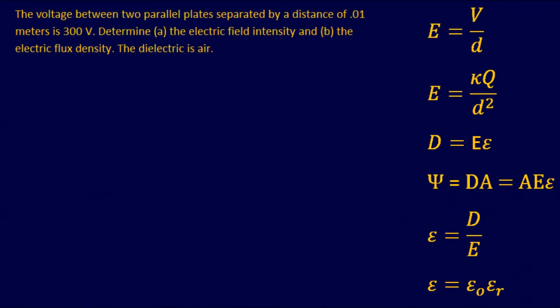Let's jump right into a practice problem. The voltage between two parallel plates separated by a distance of 0.01 meters is 300 volts. Determine the electric field intensity and the electric flux density. The dielectric is air. Let's log what we know: distance d equals 0.01 meters, and voltage equals 300 volts.